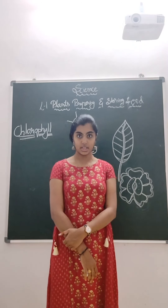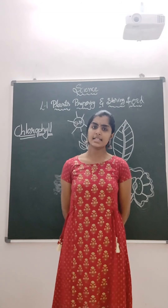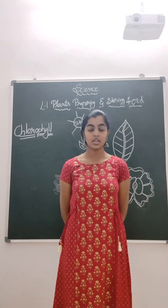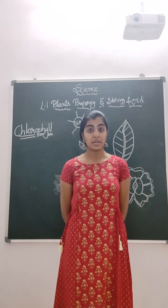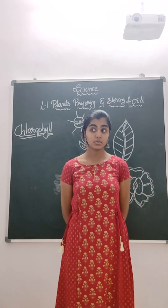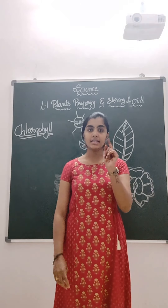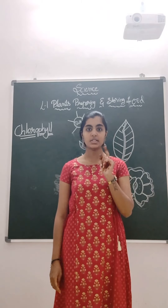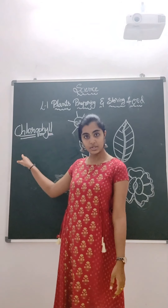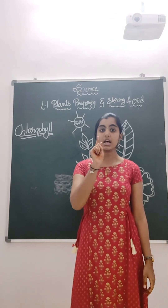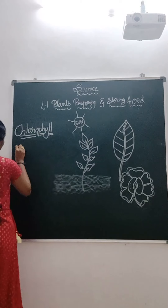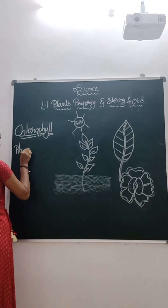Did you ever wonder why all the plants and leaves are only in green color? Why can't they be in some other color like pink, red, blue? Yes, plants have a substance called chlorophyll which makes them look green. Because of this presence of chlorophyll, plants are able to prepare their own food.